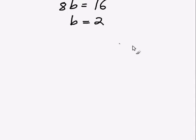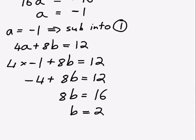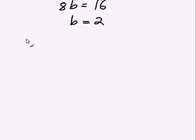Now it's always a good idea to summarize all your answers at the end of the question. So that makes it easy for your marker, so they feel good about you. So a equals negative 1 and b equals 2. And we can put a little double line to indicate that's our answer.